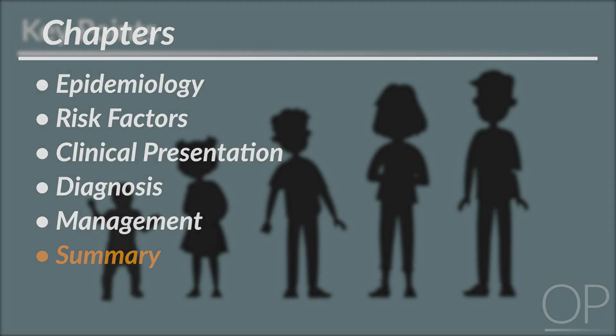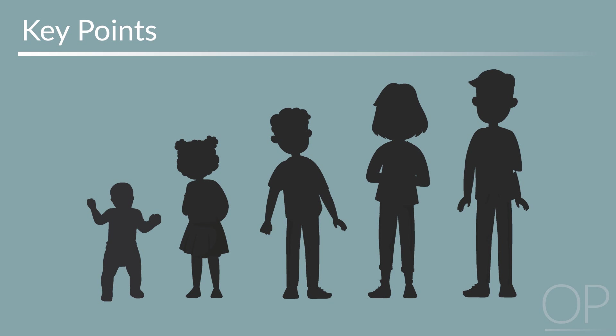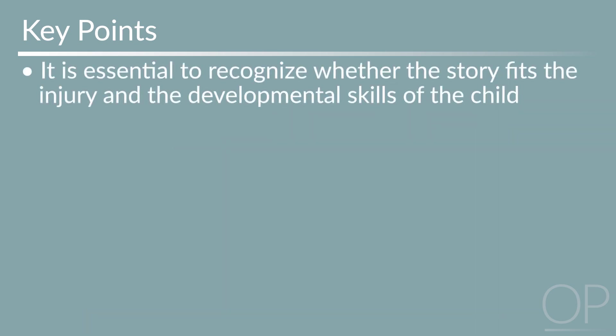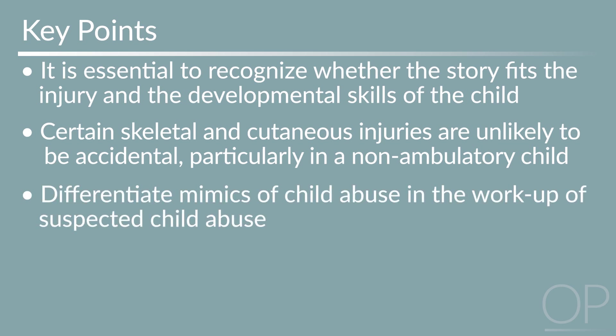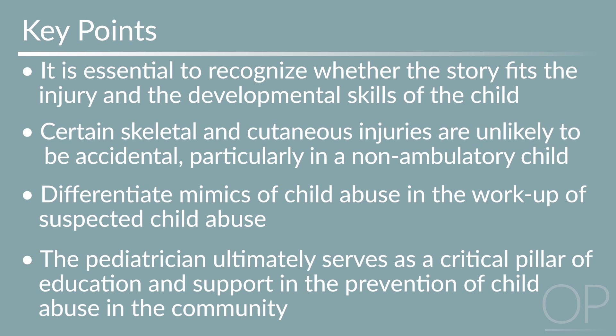Summary. Key takeaway points from this video are as follows. When evaluating a child for possible physical abuse, it is essential to recognize whether the story fits the injury and the developmental skills of the child. Although any clinical constellation of injury can result from abuse, certain skeletal and cutaneous injuries are unlikely to be accidental, particularly in a non-ambulatory child. It is important to differentiate mimics of child abuse such as rickets, osteogenesis imperfecta, and bleeding disorders in the workup of suspected child abuse. The pediatrician ultimately serves as a critical pillar of education and support in the prevention of child abuse in the community. Thank you for watching this video on child abuse.